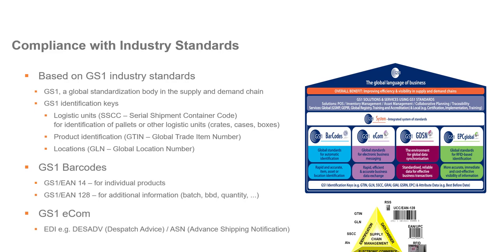You will see during the demo how we apply these standards, including the GS1-EAN 14 barcode for individual product identification, and the GS1-EAN 128 for additional information such as batch numbers, best before dates, and quantities. Produmex WMS also supports GS1 e-com — the electronic messages for sending dispatch advices and advanced shipping notifications between suppliers and customers.